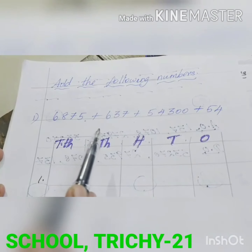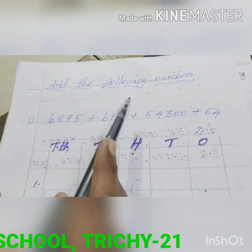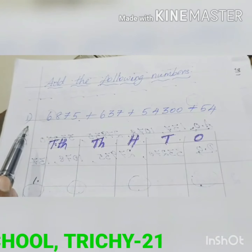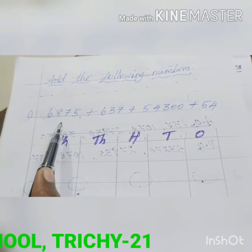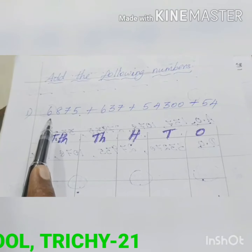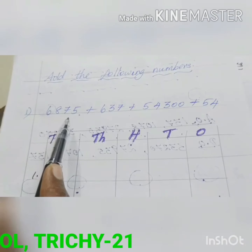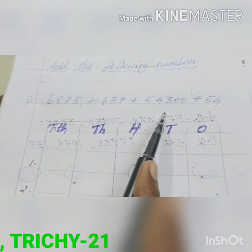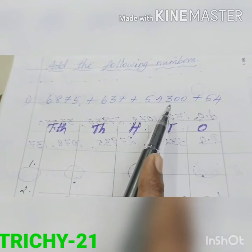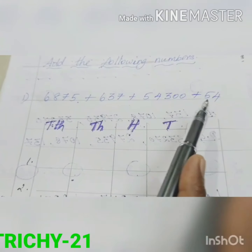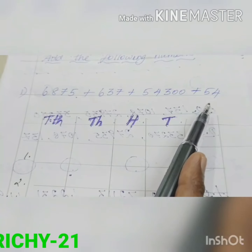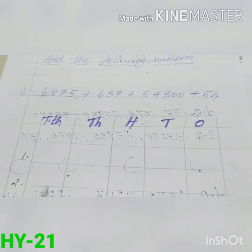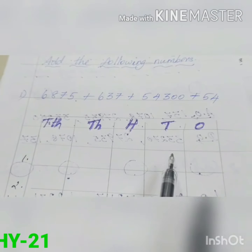Now let us see an addition sum. Add the following numbers. The first number is 6875, the second is 637, the third is 54300, and the last is 54. Now put the place value chart like this.